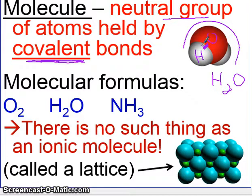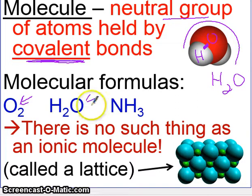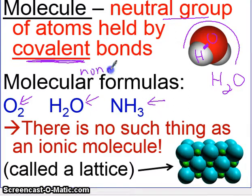Here are three examples. There's diatomic oxygen, where two oxygens are bonded together; here again is water; and here is NH3. Notice that in all three of these cases, you have nonmetals, because covalent bonds are formed from nonmetals.